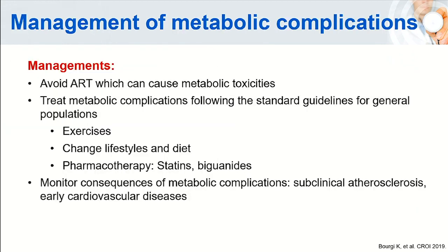For management of metabolic complications, we should avoid ART that causes metabolic toxicities if alternative regimens are available. If adolescents already have metabolic complications, we should treat them following standard guidelines for the general population—advising regular exercise, lifestyle changes, and dietary modification. If problems are intractable, we may prescribe drugs such as statins for dyslipidemia and biguanides for type 2 DM. We also need to monitor for consequences such as subclinical atherosclerosis or early cardiovascular disease to prevent morbidity and mortality.